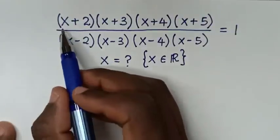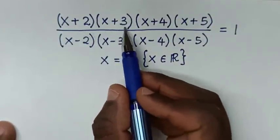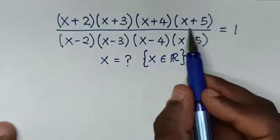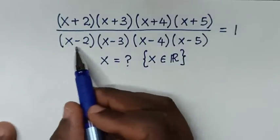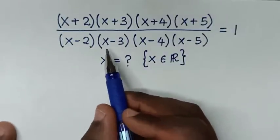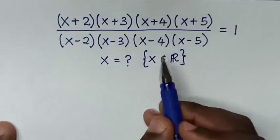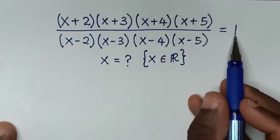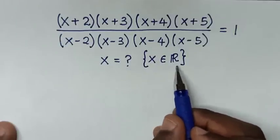Hello! How to solve (x+2)(x+3)(x+4)(x+5) over (x-2)(x-3)(x-4)(x-5) is equal to 1. To find the value of x, given that x is an element of the real numbers.